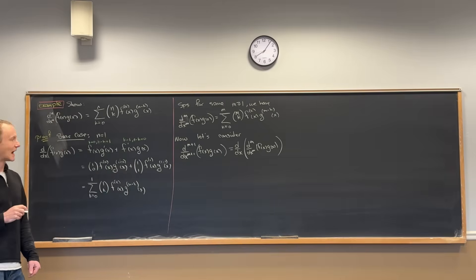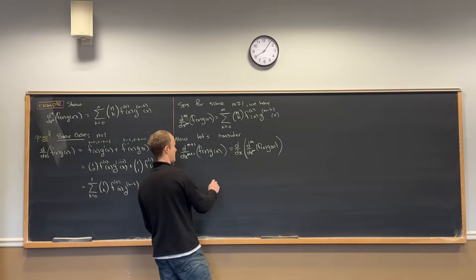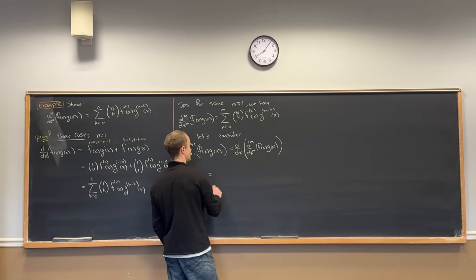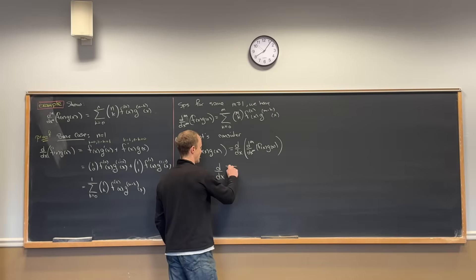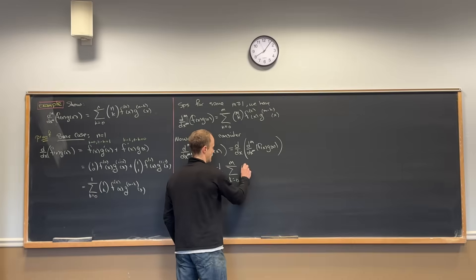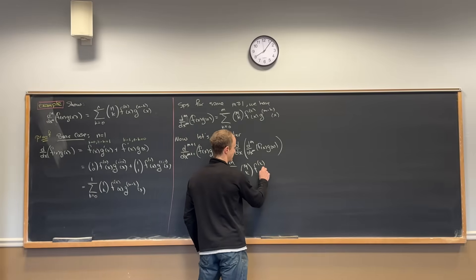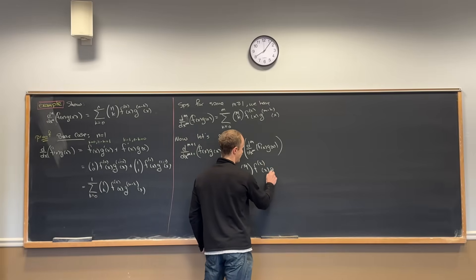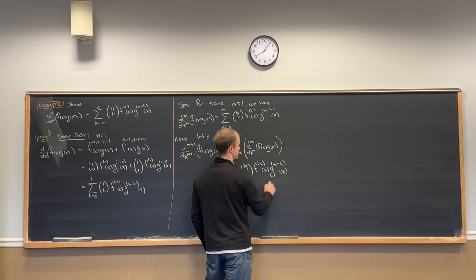But now we can apply the induction hypothesis to the mth derivative. That's going to leave us with the derivative of the sum as k goes from 0 to m of m choose k, times the kth derivative of f, times the (m minus k)th derivative of g.